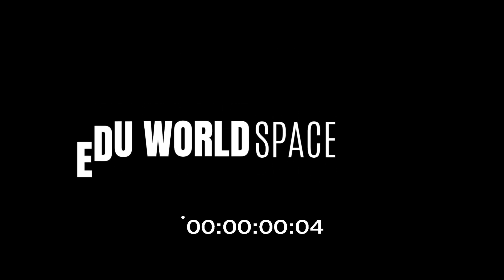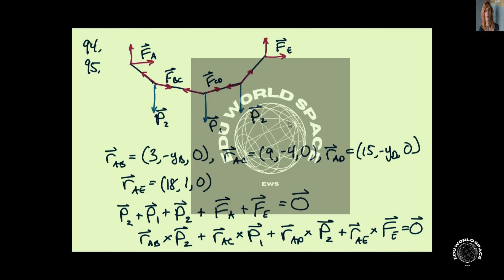Welcome to EDU WorldSpace. In this problem we have a table that is supported at two of its ends. It's basically a bunch of ropes connected with rings, and we're assuming that these ropes have no weight, so they are lines between the rings. We have point A, B, C, D, and E. At point B we have an external load, and we have an equivalent load acting at point D. And then at point C we have a different load with a different magnitude.